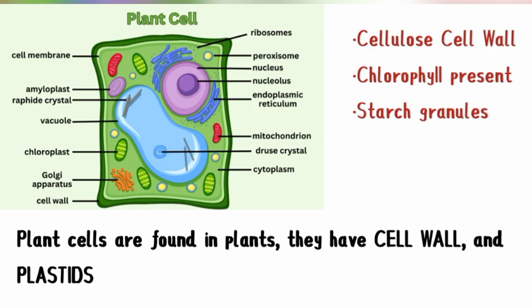The second classification method distinguishes plant cells from animal cells. Plant cells have features that distinguish them: a cell wall, chlorophyll, and starch granules. Plant cells have a cell wall, but animal cells do not. Chlorophyll is present inside the chloroplasts of plant cells.